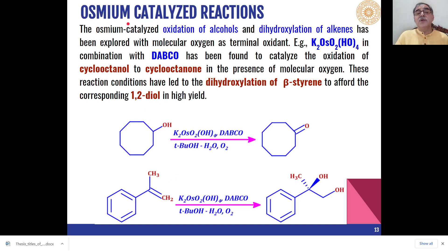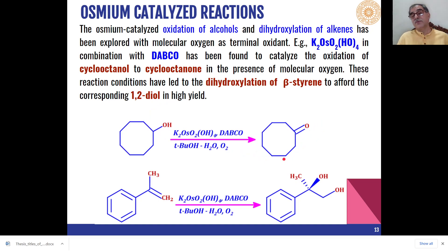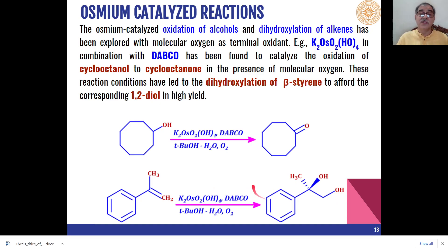Osmium-based reagents can also be used for oxidation of different types of functional groups. Potassium osmium hydroxide in combination with DABCO (diazabicyclo[2.2.2]octane) is used in combination with molecular oxygen for the oxidation of cyclooctanol to cyclooctanone in high yield. Similarly under the same conditions, β-styrene compounds can be oxidized to diols as the product, and the reaction is enantioselective in nature.